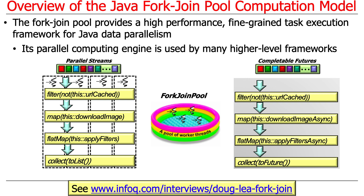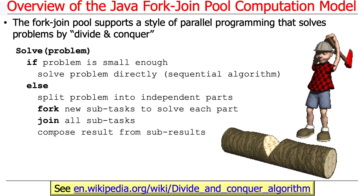This computing engine is used by lots of other things. The fork-join pool is used by parallel streams, it's used by completable futures, and it's actually used by other frameworks that are not even Java per se. For example, Akka uses the fork-join framework.